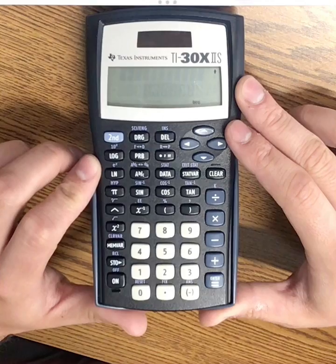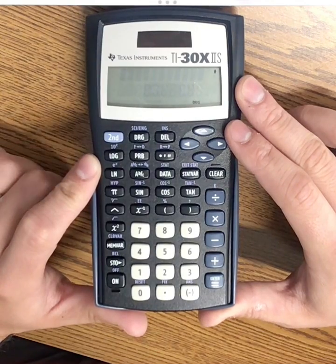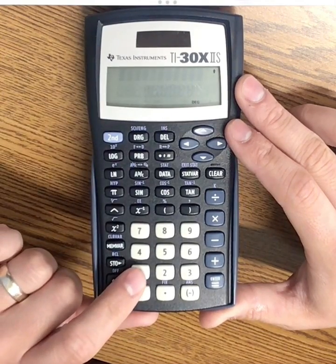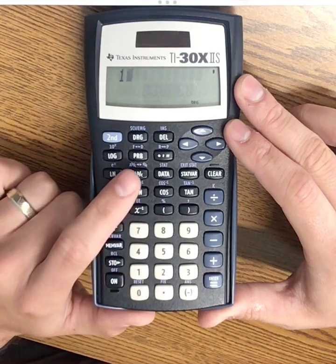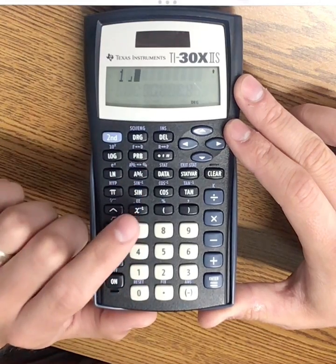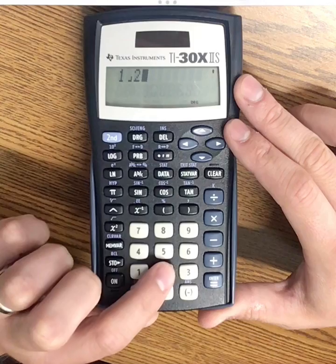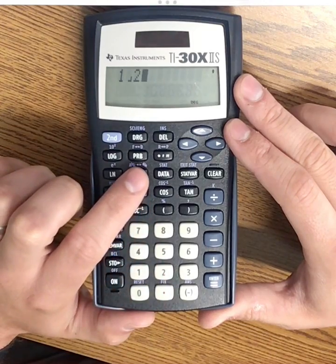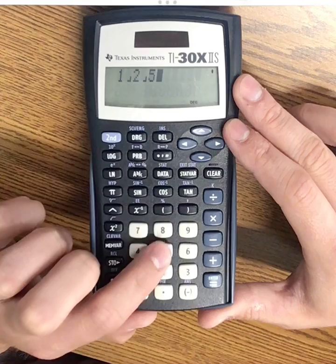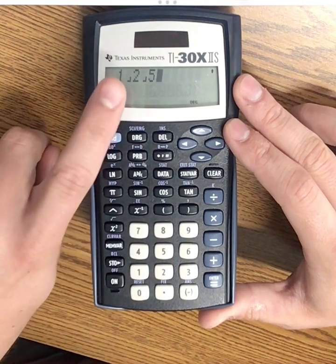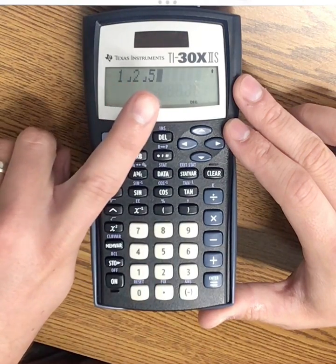if I wanted to type out one and two-fifths, I would type the one first, click the fraction button, and then two-fifths would just be the two, fraction button, fifths.